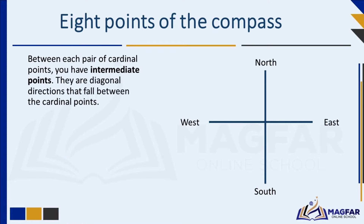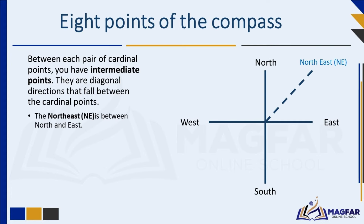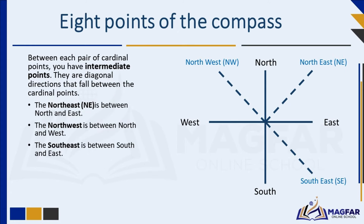Between each pair of cardinal points, you have intermediate points. They are diagonal directions that fall between the cardinal points. Intermediate points provide more specific directions, allowing us to be even more precise in describing locations or navigating. The North-East is between North and East. The North-West is between North and West. The South-East is between South and East.